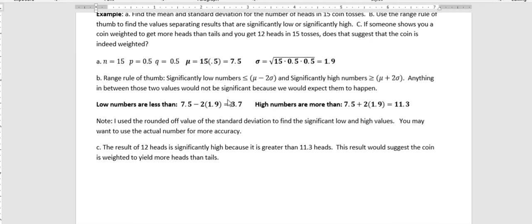And the third part was if someone gave you a coin and you got 12 out of 15, would that mean that it's probably weighted? Well, the result of 12 heads is significantly high because it's greater than the 11.3, which we said was the boundary between not significant and significant. Since it's greater than 11.3, this result would suggest that the coin is weighted to yield more heads than tails.